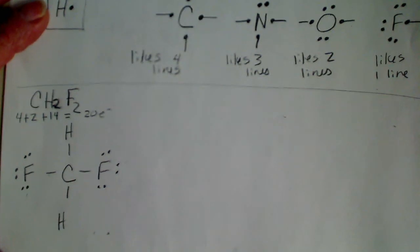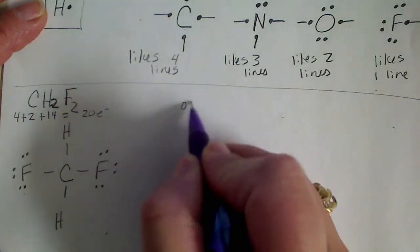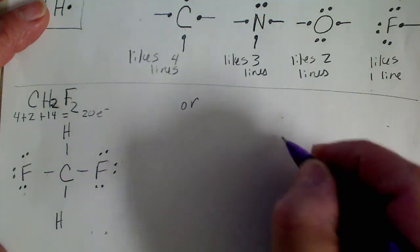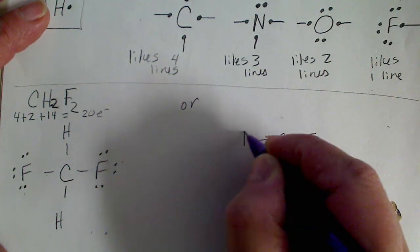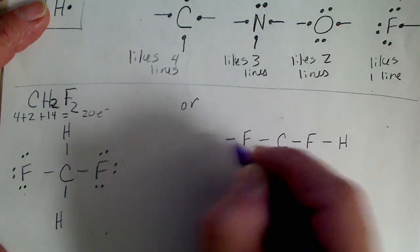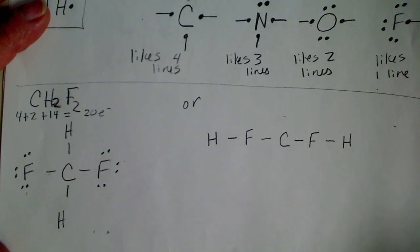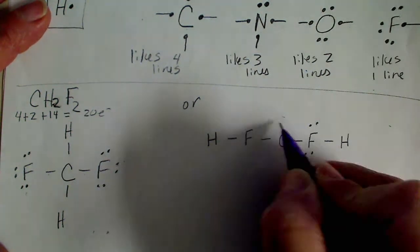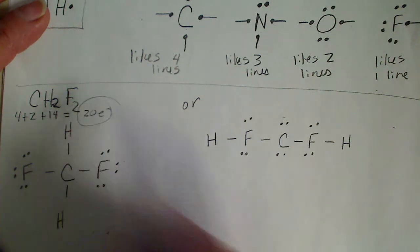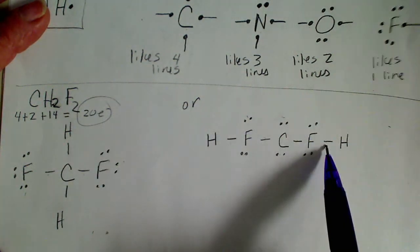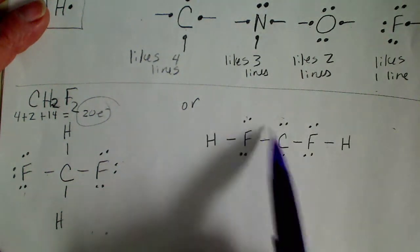It's also possible to draw another valid dot structure — one that uses all of the available electrons and satisfies everyone's octet. If we put carbon in the middle, connect a fluorine on either side of carbon, and then a hydrogen hanging off each end, we still have four lines. Adding lone pairs to everything that doesn't yet have eight electrons, we also end up using all twenty electrons, and hydrogen is happy with two electrons while everything else has eight.